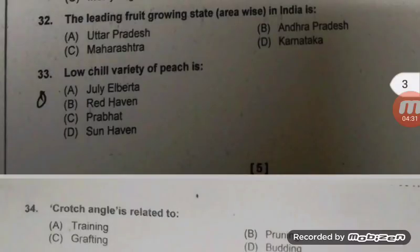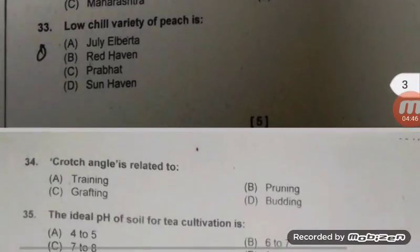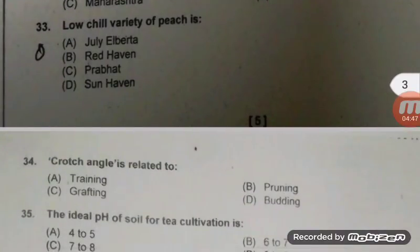Question 32: The leading fruit growing state in India — maximum area of fruit is Maharashtra and maximum production is Andhra Pradesh and productivity is MP. This is data taken from NHB 2017. Next question: Low chilling variety of peach — this is a very common question asked several times in exams.